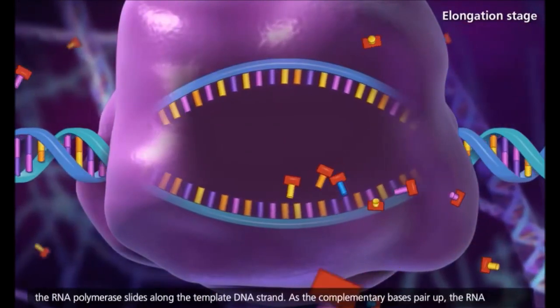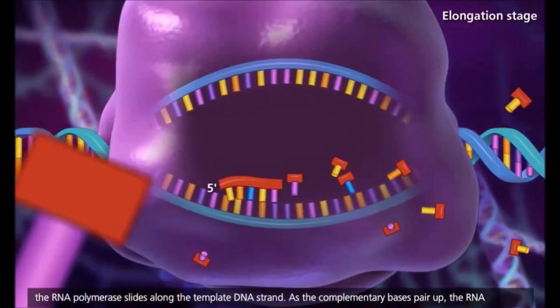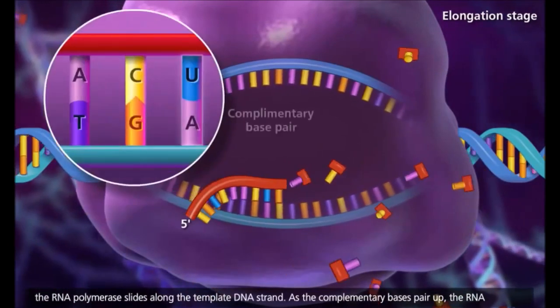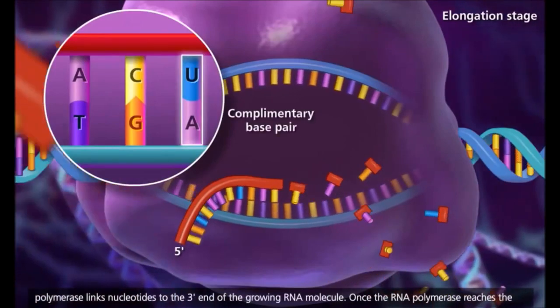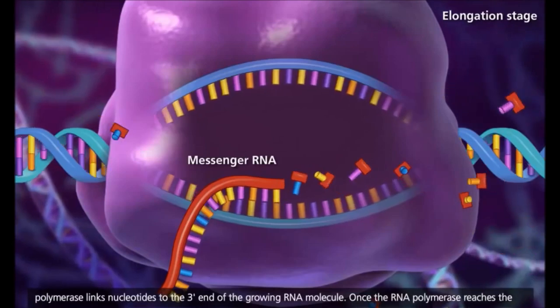Then during elongation, the RNA polymerase slides along the template DNA strand. As the complementary bases pair up, the RNA polymerase links nucleotides to the three-prime end of the growing RNA molecule.